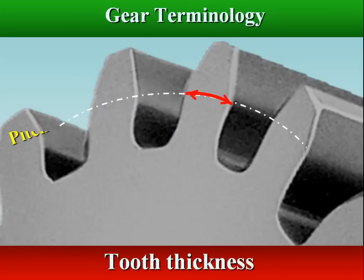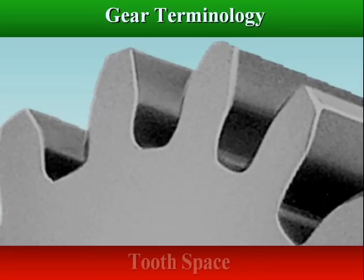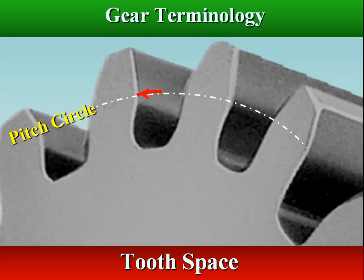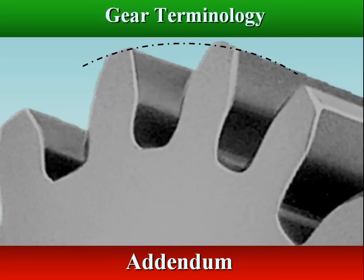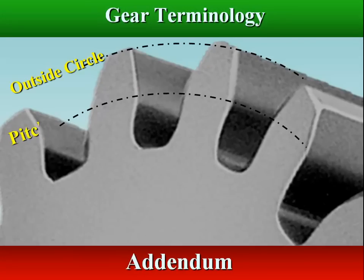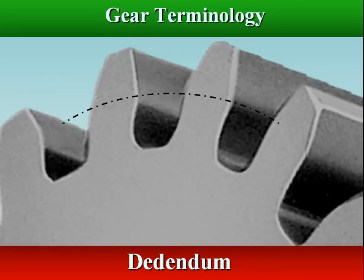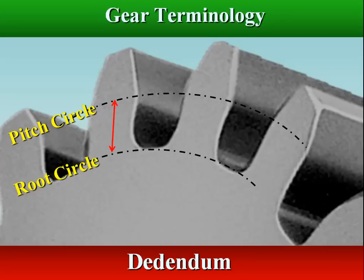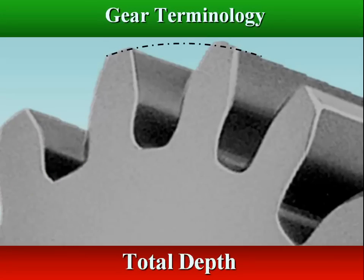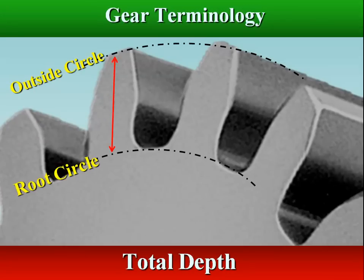Tooth thickness is the width of the tooth measured along the pitch circle. Tooth space is the width of space between the two adjacent teeth measured along the pitch circle. Addendum is the radial distance from the pitch circle to the top of the gear tooth. Dedendum is the radial distance from the pitch circle to the bottom of the tooth. Total depth is the radial distance from the top of the gear tooth to the bottom of the tooth.